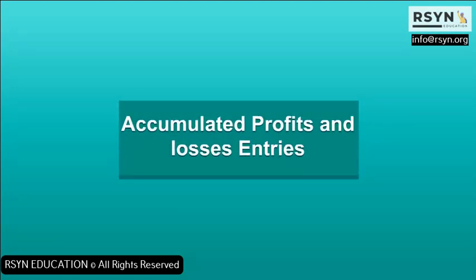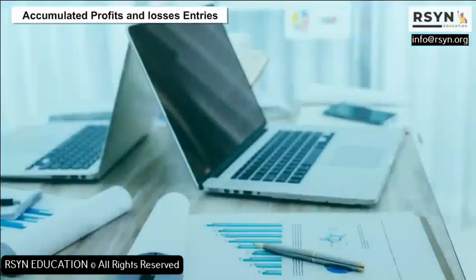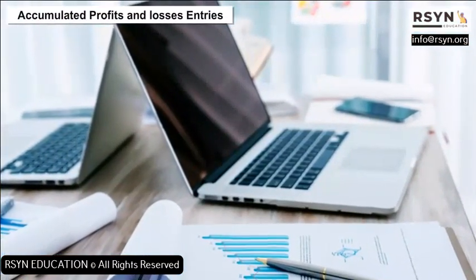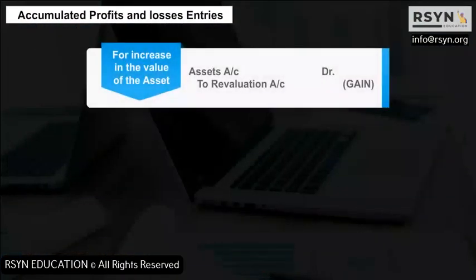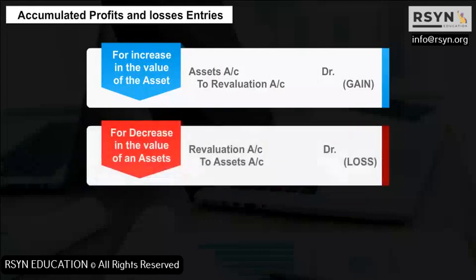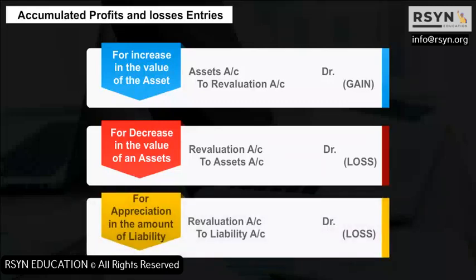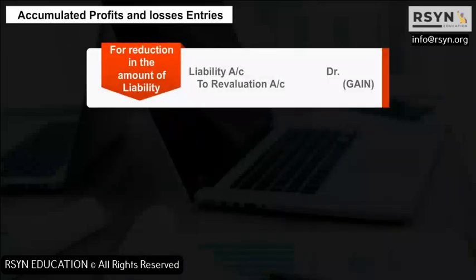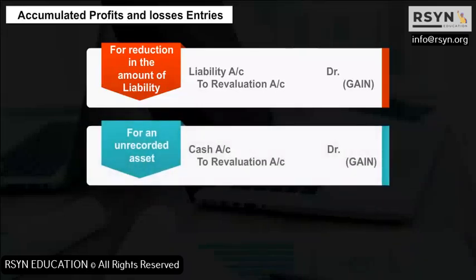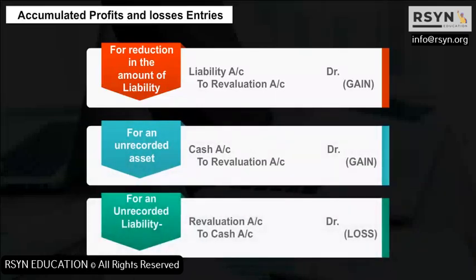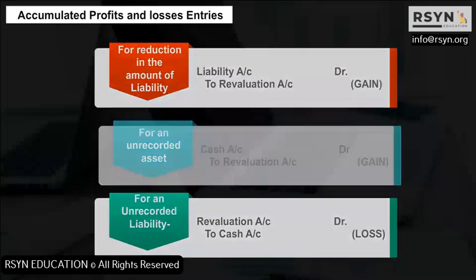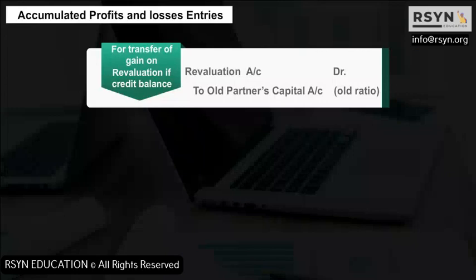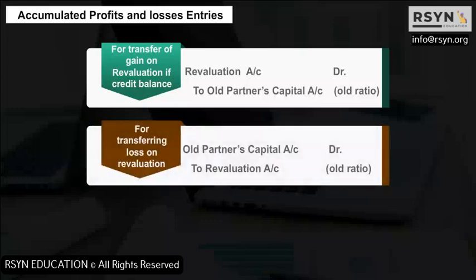Journal entries for revaluation of assets and liabilities cover: increase in value of an asset, decrease in value of an asset, appreciation in the amount of a liability, reduction in the amount of a liability, an unrecorded asset, an unrecorded liability, transfer of gain on revaluation if credit balance, and transferring loss on revaluation.